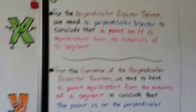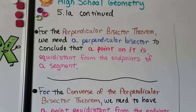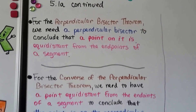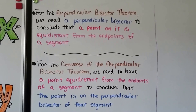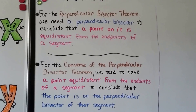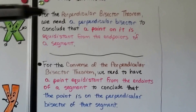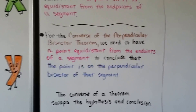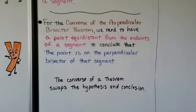For the perpendicular bisector theorem, we need a perpendicular bisector to conclude that a point on it is equidistant from the endpoints of a segment. For the converse, we need a point equidistant from the endpoints to conclude it's on the perpendicular bisector. The converse swaps the hypothesis and conclusion of the original theorem.